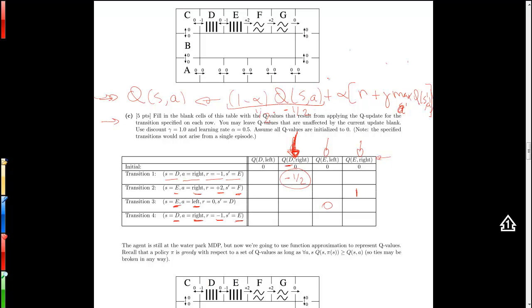And then we get plus alpha, which is 0.5 times the reward minus 1, plus gamma which is 1 times the max of all actions of Q(S prime). S prime is E. So let's look at the values for E. We have a 1 and a 0, so the max is 1, so it's 1 here.